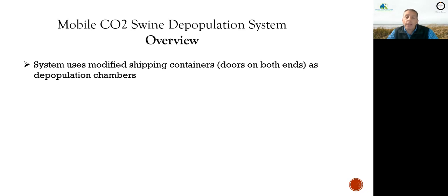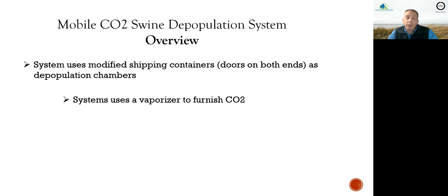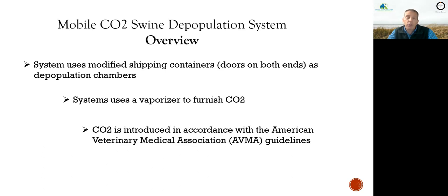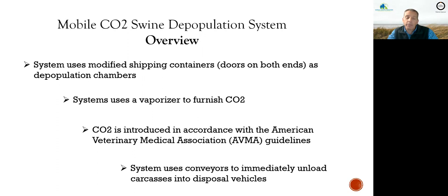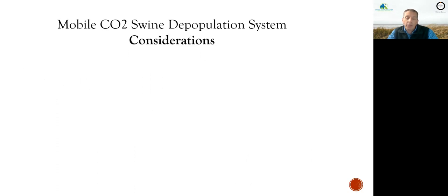Our system uses modified shipping containers — I'll show you pictures in a moment — and these containers have doors on both ends. Those are our depopulation chambers. We use a vaporizer to furnish CO2 to the depopulation chambers, and we introduce the CO2 in accordance with the American Veterinary Medical Association guidelines on humane euthanasia. The system also uses conveyors to immediately unload the carcasses into disposal vehicles.